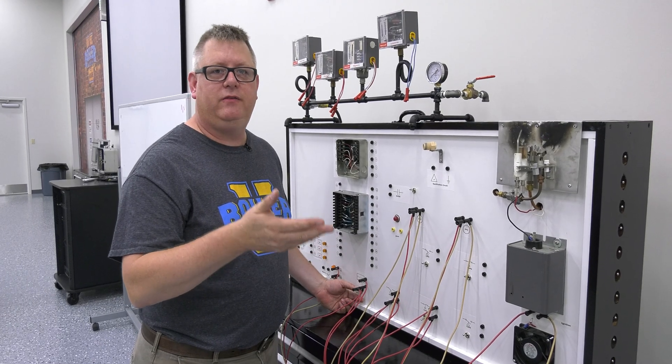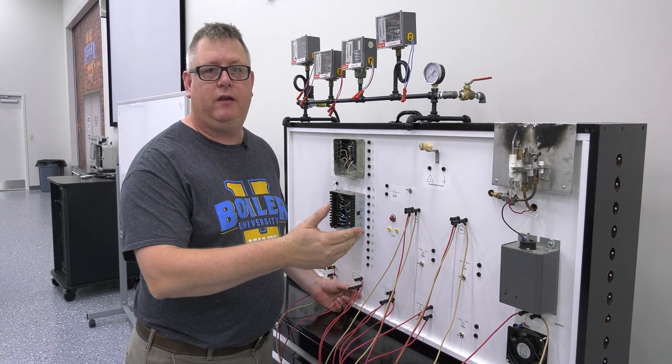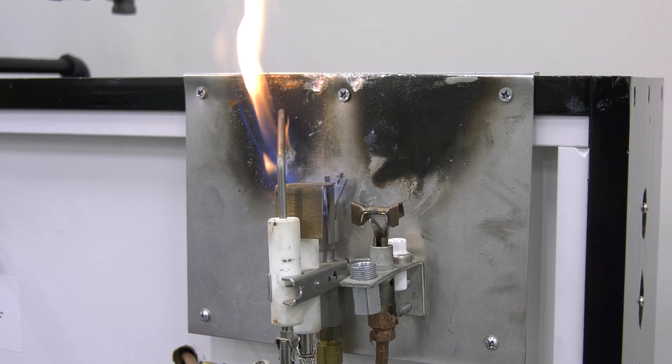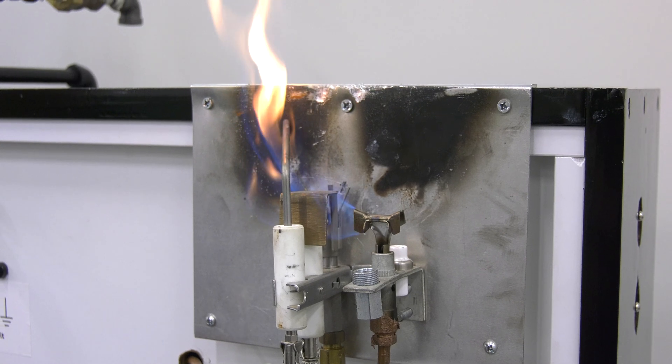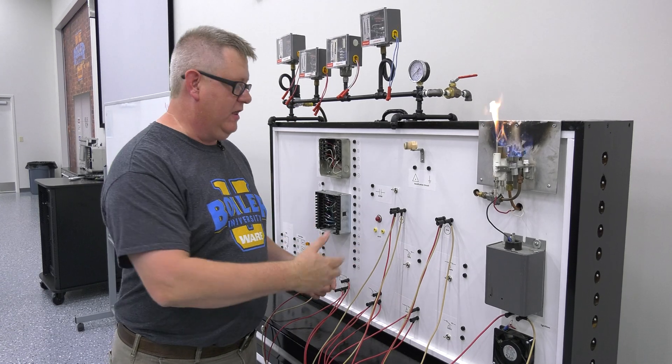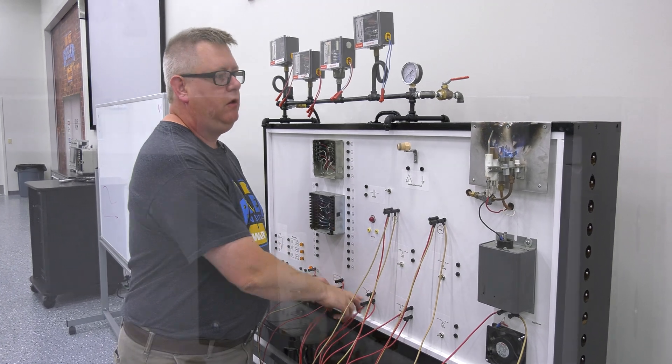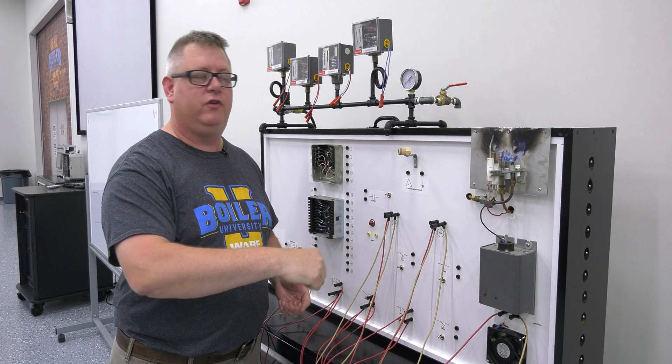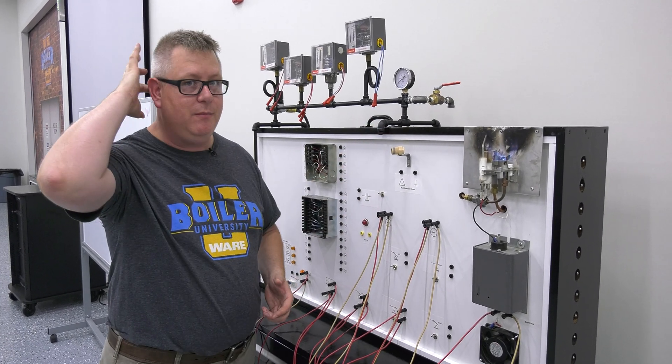The second type of pilot is an interrupted pilot. On our light-off sequence, we'll get spark, we'll get pilot, then we'll get main. Once that's proven, our spark and pilot will extinguish, so we're proving the main flame on its own. That's an interrupted pilot.